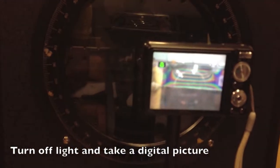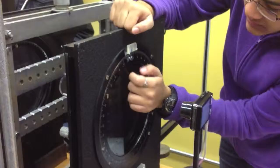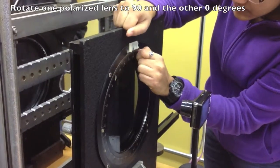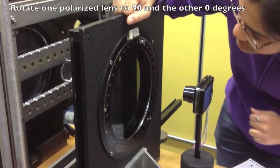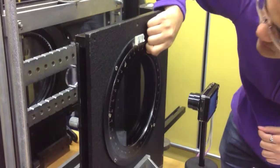Turn off the light and take a digital picture. Rotate one polarized lens to 90 degrees and the other to 0 degrees. Again, turn off the light and take a picture.